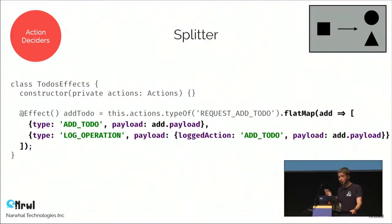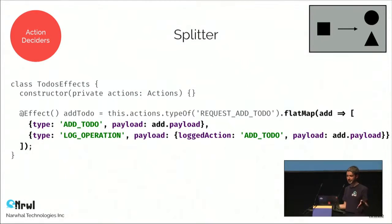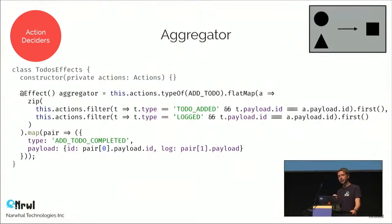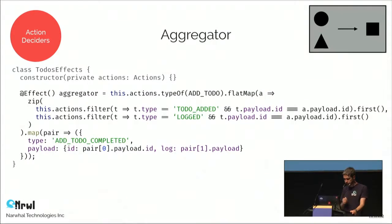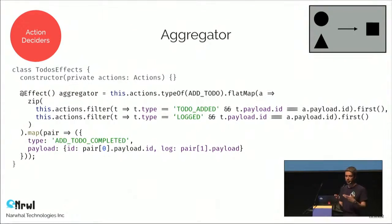The next decider is called a splitter — it takes an action and maps it to an array of actions, similar to splitting one method into multiple methods. This allows us to test every single action independently. The opposite of the splitter is the aggregator: it takes an array of actions and maps them into a single action. For example, we have two actions — to-do-added and logged — which we combine to create a new action: add-to-do-completed.